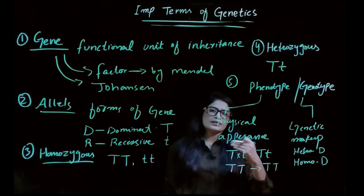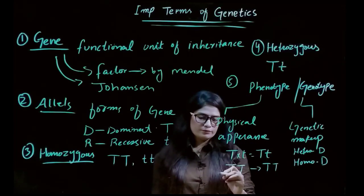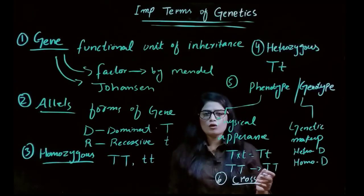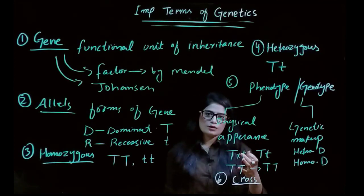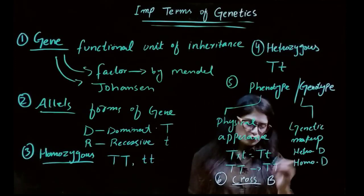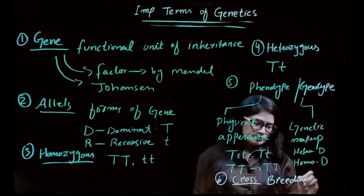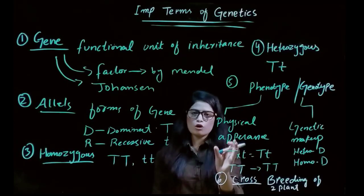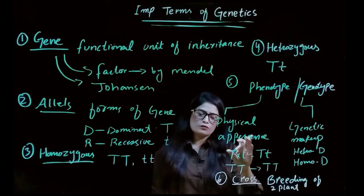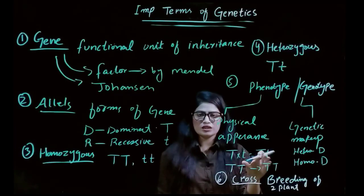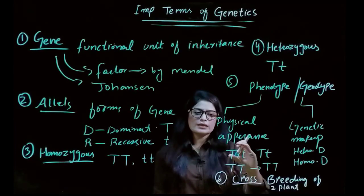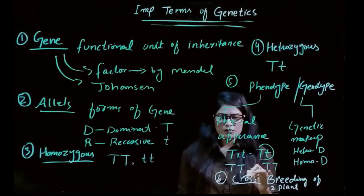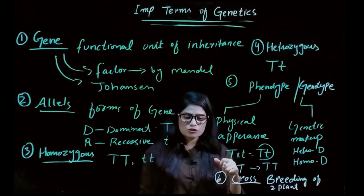The sixth term is cross. Cross means the breeding or reproduction of two plants. For example, we take one tall plant and cross it with a short plant. We cross the two alleles of these two plants, and the product will be the tall plant. This is what we call a cross.